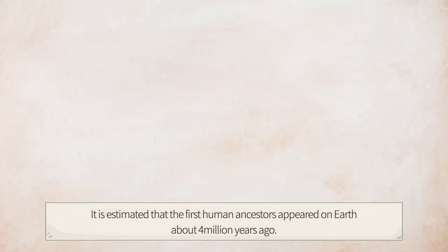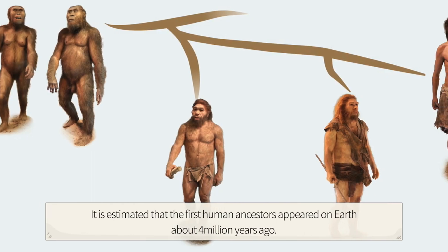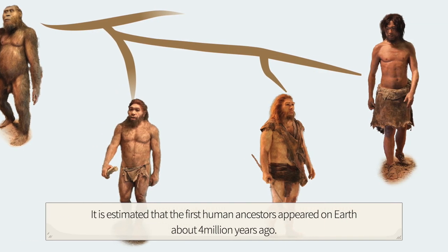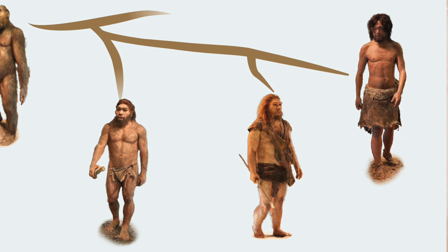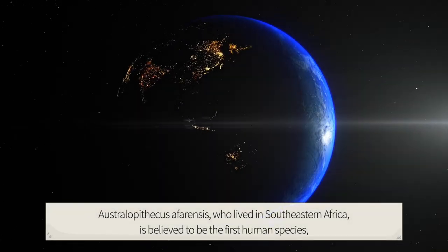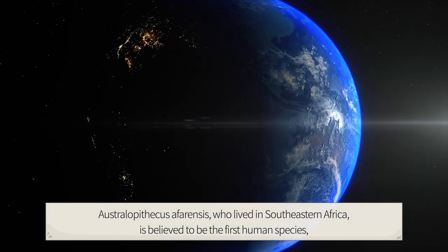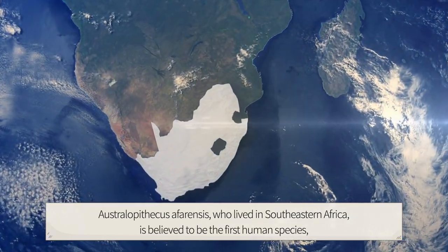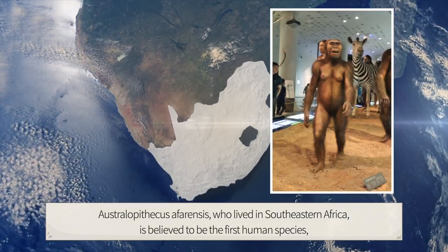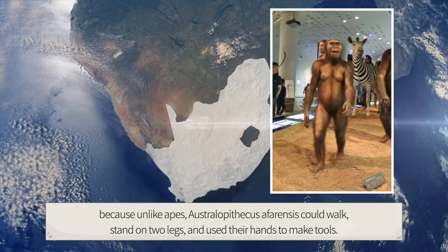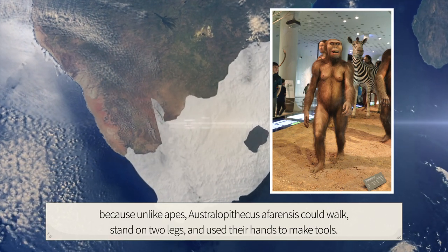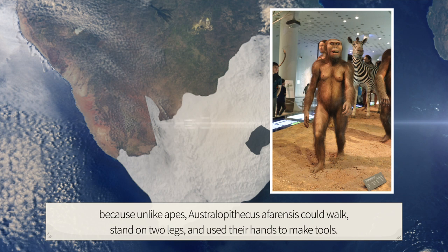It is estimated that the first human ancestors appeared on Earth about four million years ago. Australopithecus afarensis, who lived in southeastern Africa, is believed to be the first human species because, unlike apes, A. afarensis could walk, stand on two legs, and use their hands to make tools.